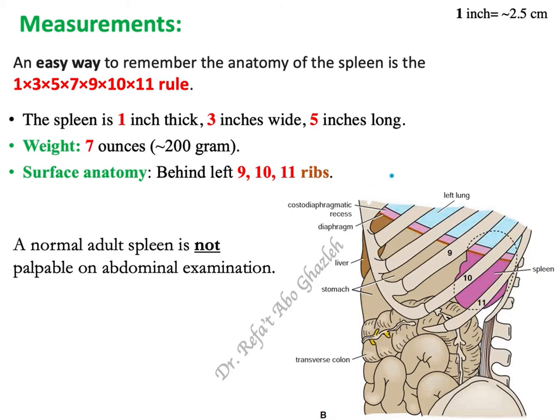Now let me show you the measurements. There is an easy way to remember the measurements related to the spleen — look for these odd numbers: 1, 3, 5, 7, 9, 10, and 11. The first three numbers — 1, 3, 5 — indicate: 1 indicates the thickness of the spleen, 3 the width, and 5 the length.